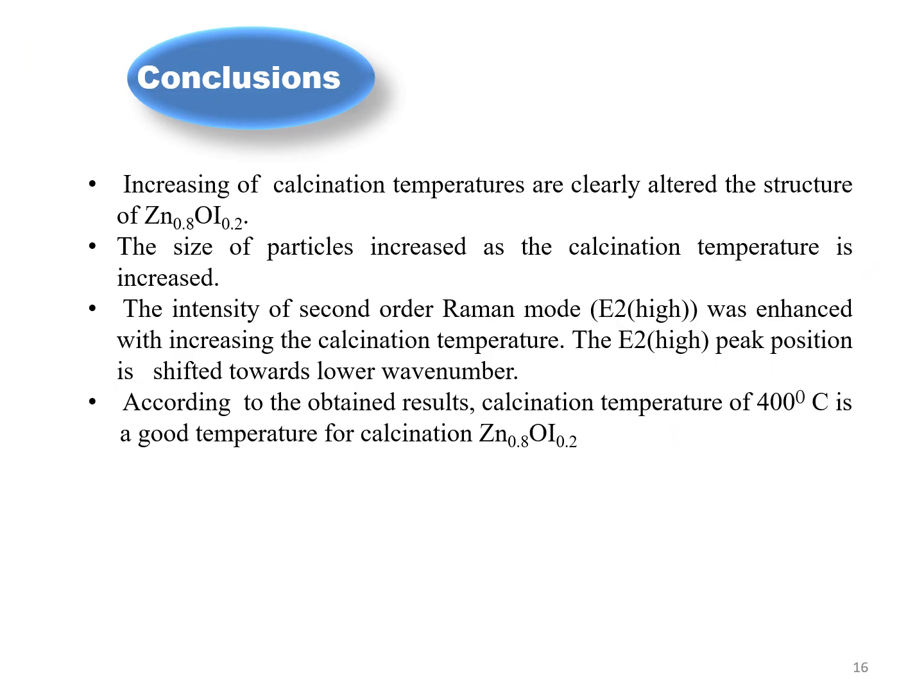In conclusion, increasing calcination temperatures clearly altered the structure of iodine-doped ZnO. The size of particles increased as the calcination temperature increased. The intensity of second-order Raman mode was enhanced with increasing calcination temperature. The second Raman mode peak position is shifted toward lower wavenumbers at calcination temperature of 400 Celsius.